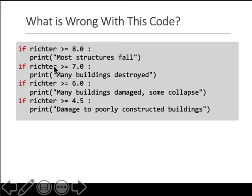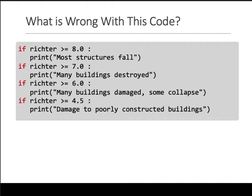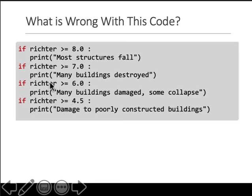Look at this code. Here you're checking if Richter is greater than or equal to 8, if Richter is greater than or equal to 7, and so on. What if my Richter scale value is 9? Which of these statements should be executed? Well, 9 >= 8 is true, so that line will be printed. Then it checks the next condition — also true — so that prints. Then the next — also true. So all four lines will be printed.